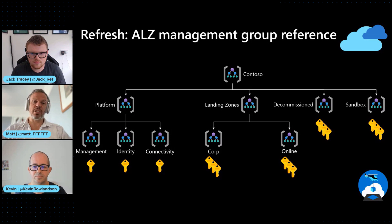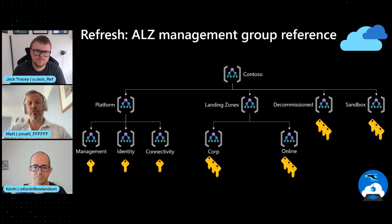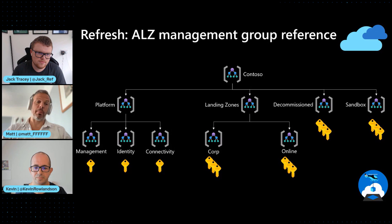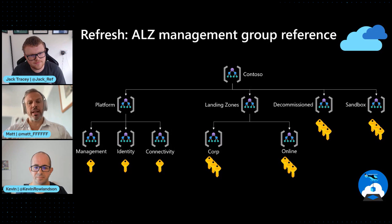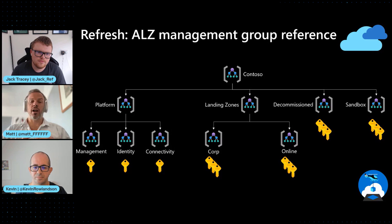The reason that they're different is because there's a policy difference between those two management groups. In corp, by default, you're not allowed to use public IP addresses, whereas in online you are. So we create management groups because we need different governance frameworks for these types of workloads.